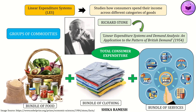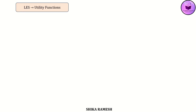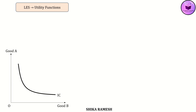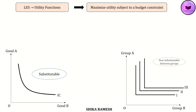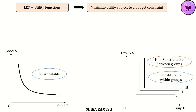Richard Stone's original idea was to use the linear expenditure system to connect household expenditure surveys with national income accounting. LES is built on the foundation of utility functions, just like in indifference curve analysis, where we assume consumers maximize their utility subject to a budget constraint. However, in LES, instead of individual goods, we take groups of goods, and these groups are non-substitutable, although substitution can happen within each group.